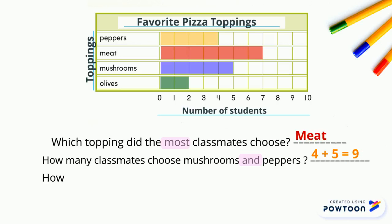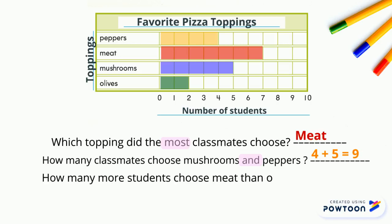Last question: how many more students chose meat than olives? As we all know, 'than' is a keyword for minus. So we will write the number of meat minus the number of olives. The answer will be seven minus two, which equals five.